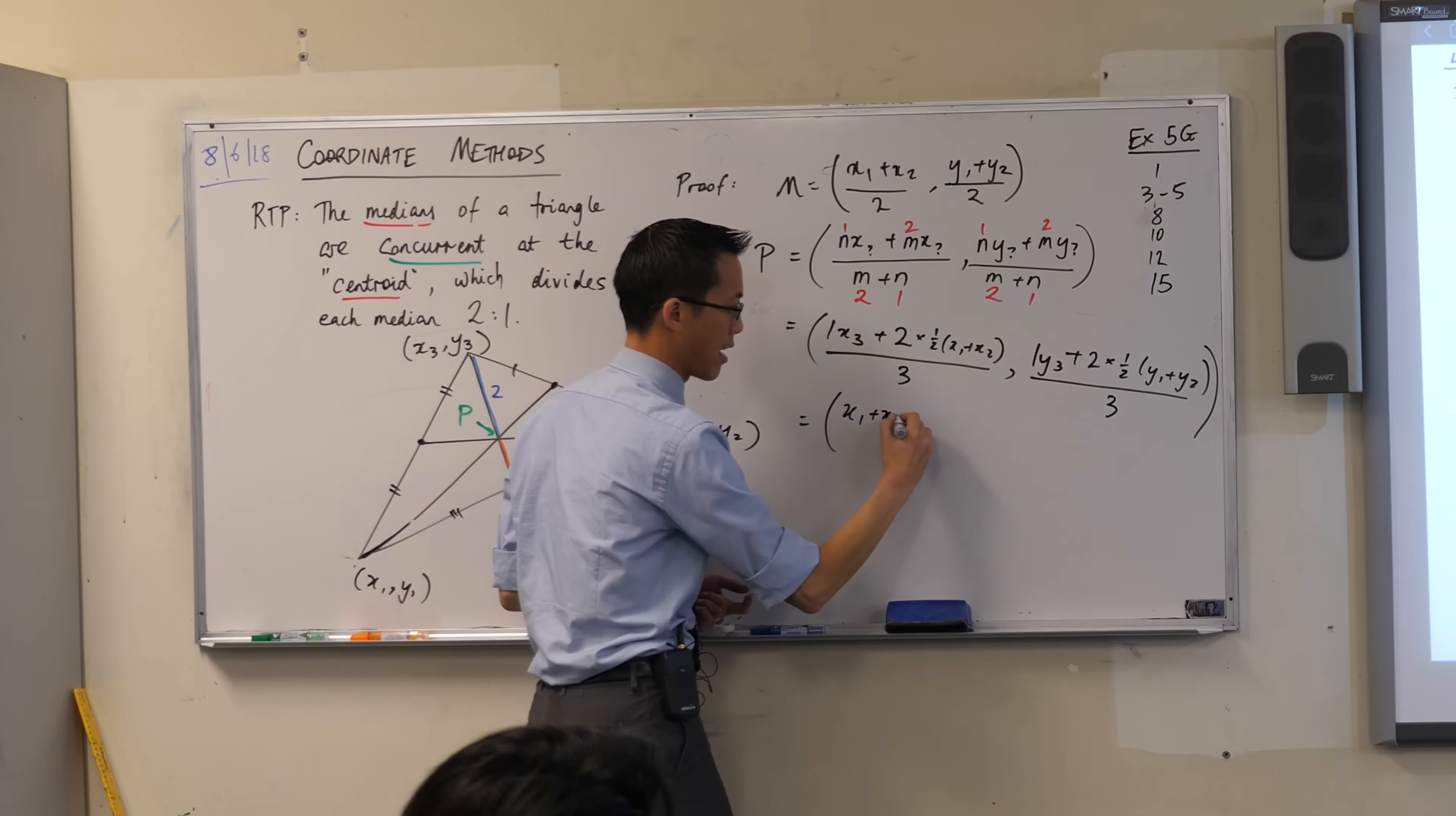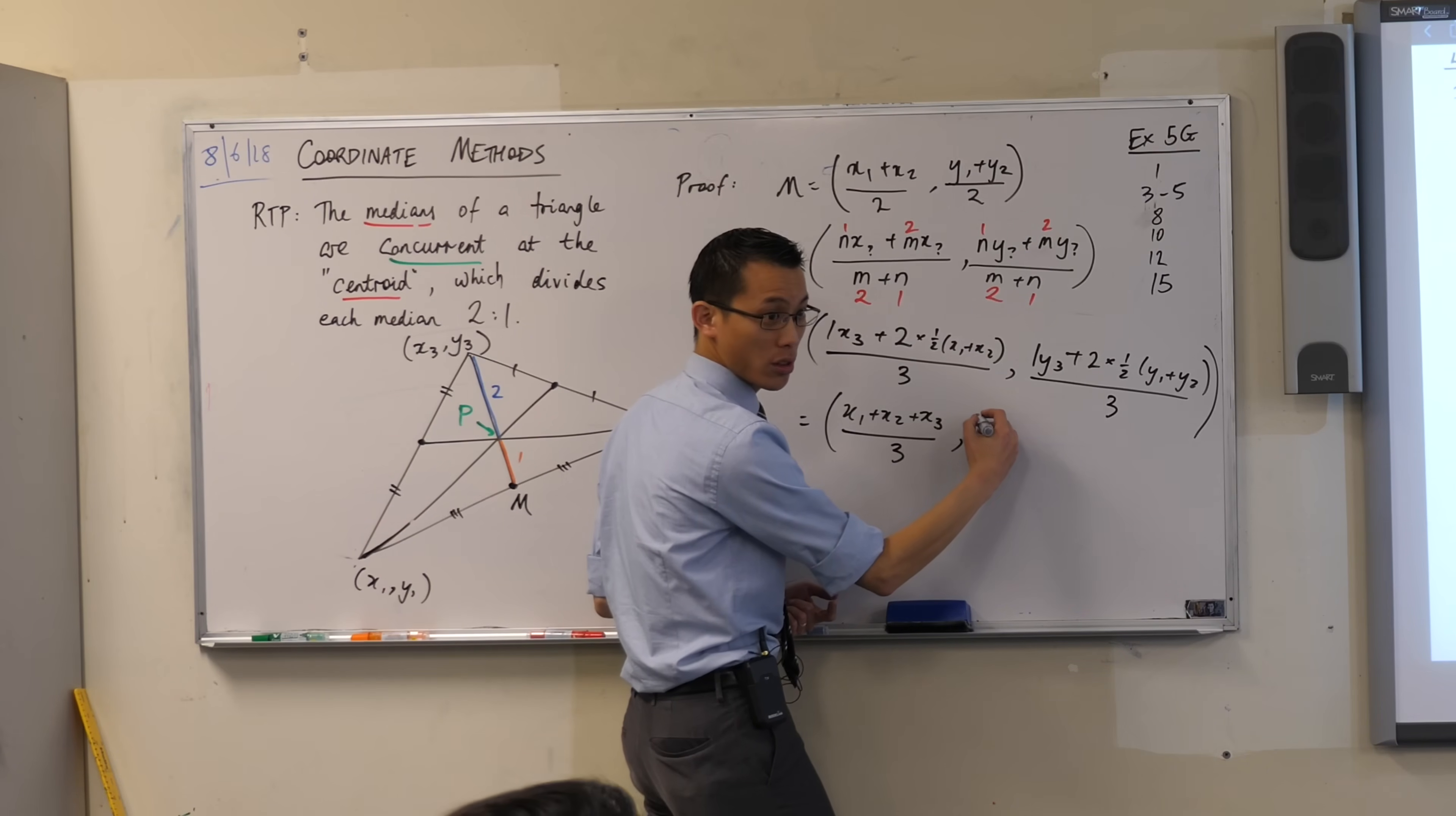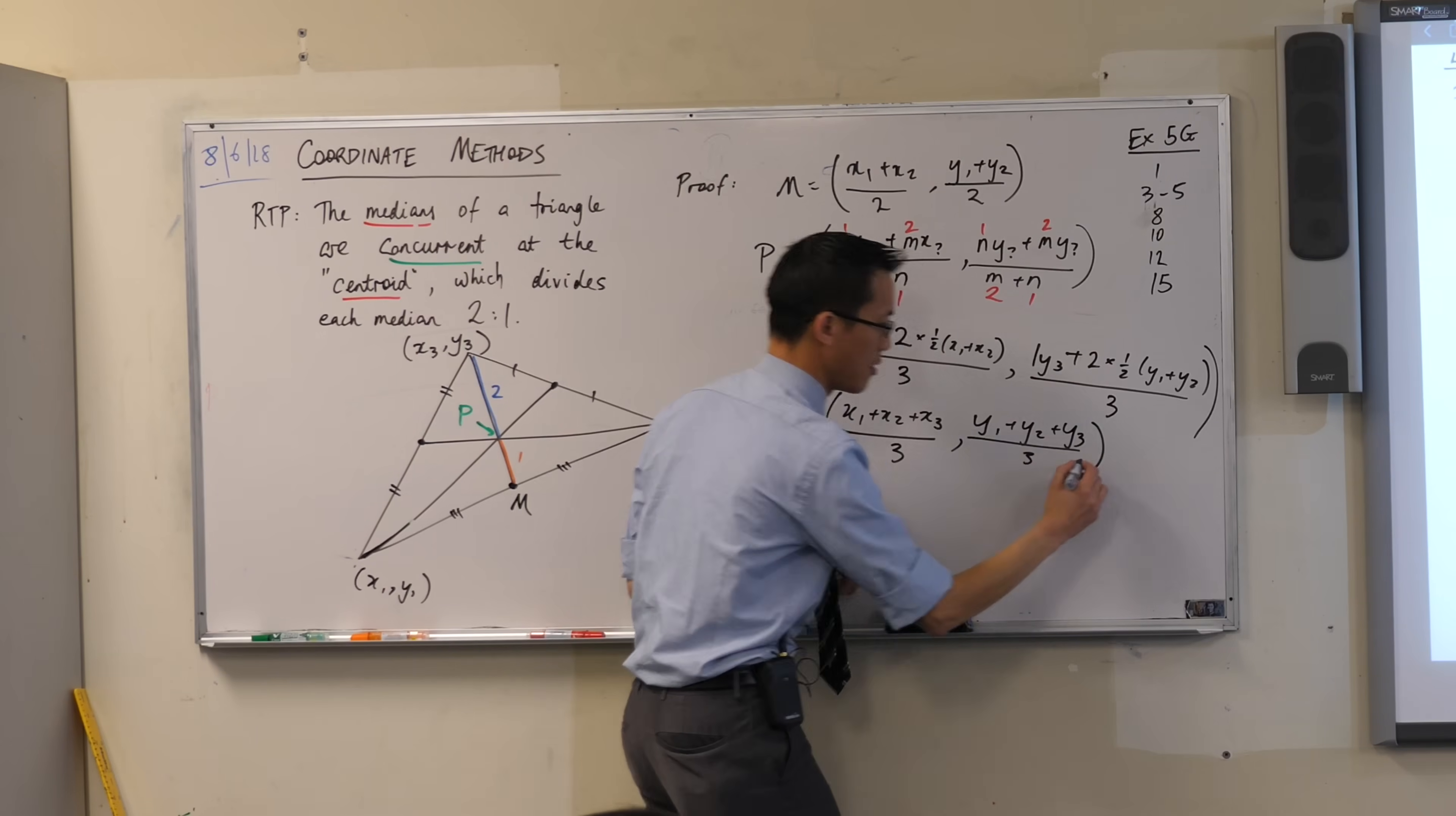x1 plus x2 plus x3. And that's all divided by 3. Then you've got what's on the right-hand side. It's everything the same, but for y's, right?